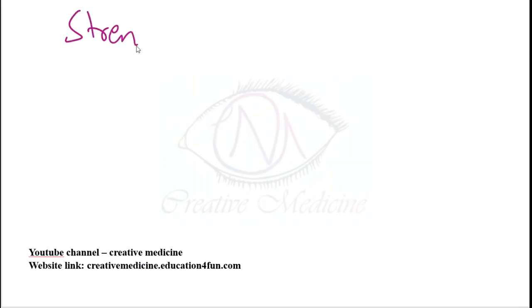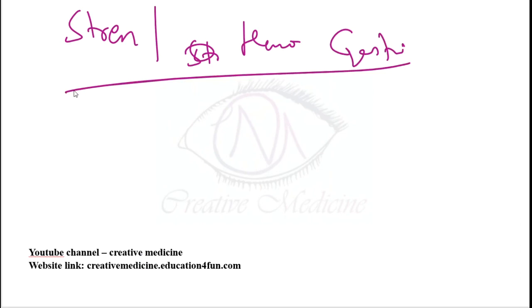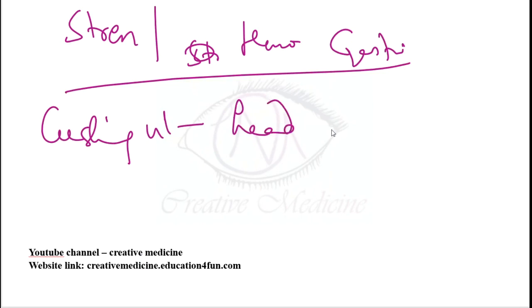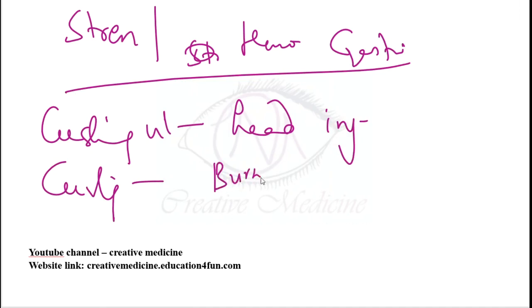Stress ulcers, also called stress gastric ulcers, stress gastritis, or hemorrhagic gastritis, include two main types. Cushing's ulcers occur mainly due to head injury. Curling's ulcers mainly occur due to burns.